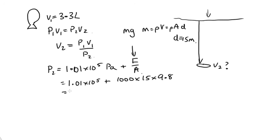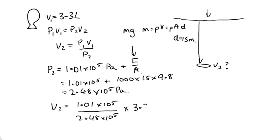we have 2.48 times 10 to the 5 pascals. And so V2 is equal to 1.01 times 10 to the 5, over 2.48 times 10 to the 5, times 3.3 liters. And solving that, we get 1.3 liters.